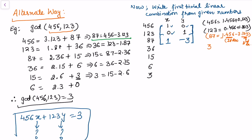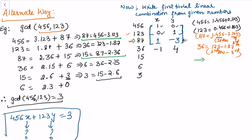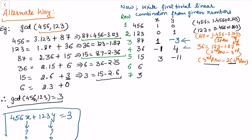For the value 36, since 36 = 123 - 1×87, that is row2 - 1×row3, the coefficients become (0 - 1×1, 1 - 1×(-3)) = (-1, 4). For the value 15, since 15 = 87 - 2×36, that is row3 - 2×row4, the coefficients become (1 - 2×(-1), -3 - 2×4) = (3, -11).